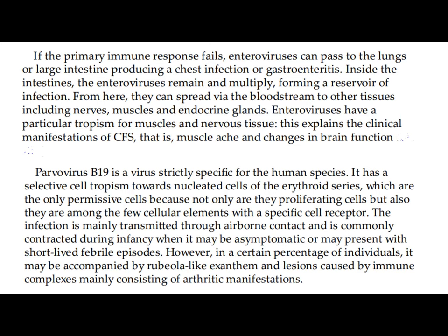Enteroviruses have a particular tropism for muscles and nervous tissue. This explains the clinical manifestations of chronic fatigue syndrome — the muscle ache and changes in brain function. Parvovirus B19 is a virus strictly specific for the human species. It has selective cell tropism towards nucleated cells of the erythroid series, which are the only permissive cells because they are proliferating cells with a specific cell receptor. The infection is mainly transmitted through airborne contact and is commonly contracted during infancy, when it may be asymptomatic or may present with short-lived febrile episodes, and in some individuals may be accompanied by rubeola-like exanthem and arthritic manifestations.